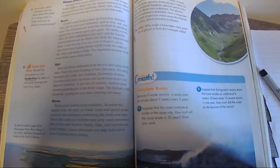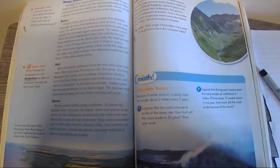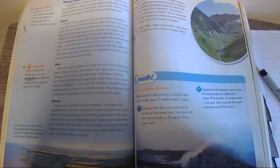Rain. Rain can loosen sediments from the soil and carry them away. Rain can cause flooding in low, flat areas. Flooding damages soil, roads, and buildings.